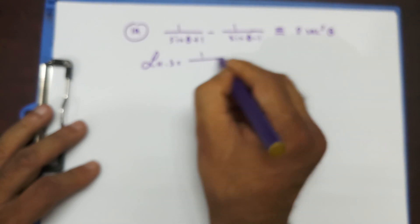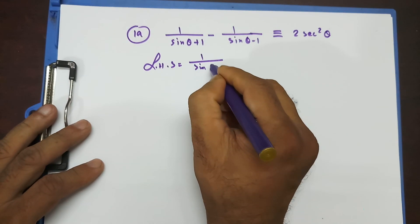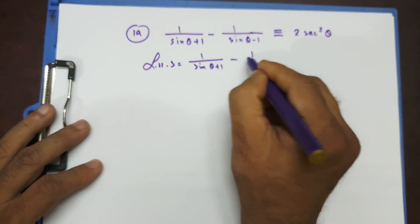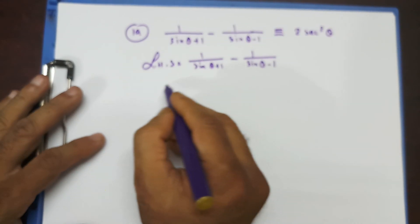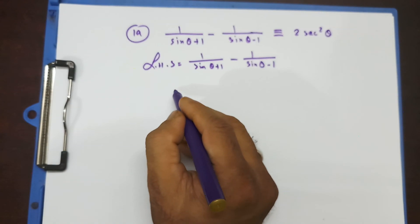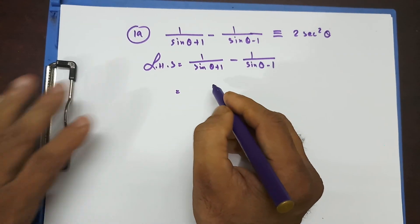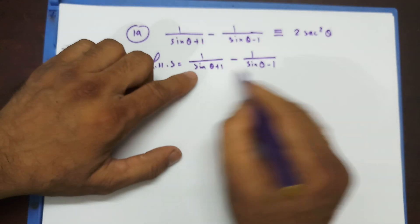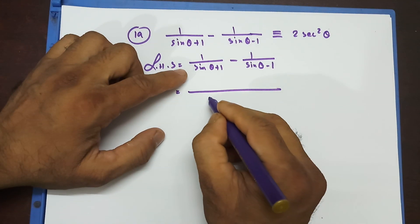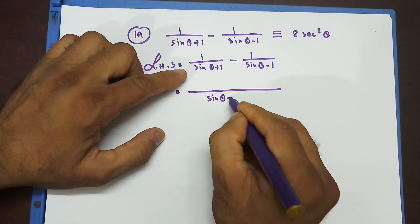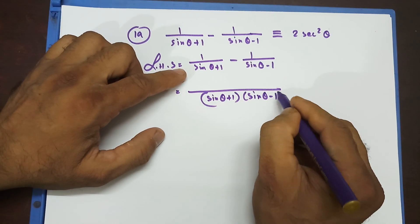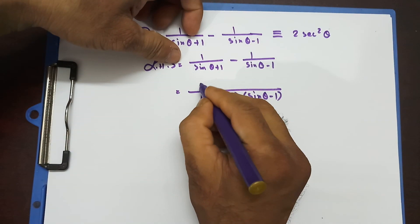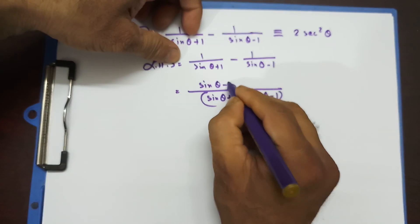We're going to start from the left-hand side. So 1/(sinθ + 1) minus 1/(sinθ - 1). What I can do is take the LCM. In the LCM, I write sinθ + 1 and sinθ - 1. Then 1 times this gives sinθ - 1, and over here it gives sinθ + 1.